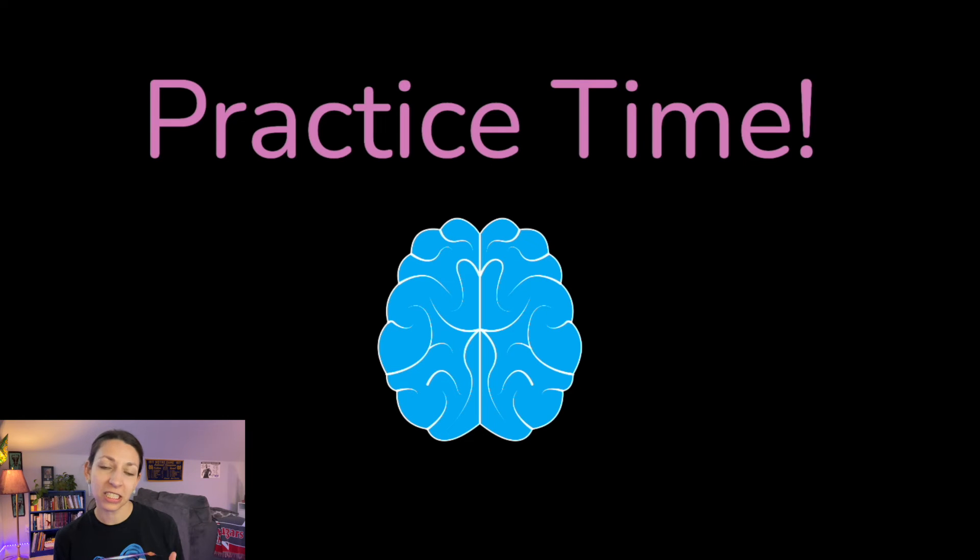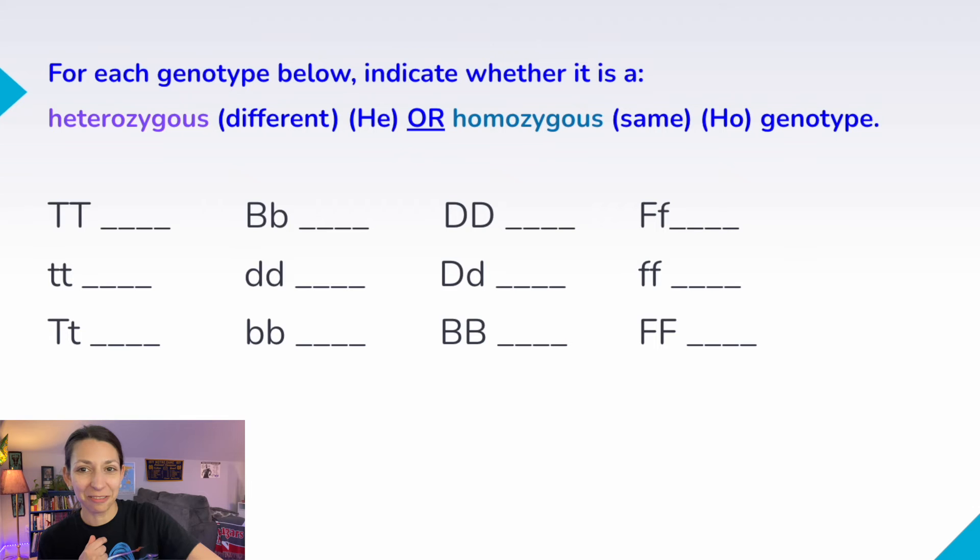All right, let's get into some practice. Today's practice is not multiple choice. It's going to be some fill in the blank. You might want to get some scratch paper out to work on those Punnett squares. Let's do it. All right, for each of the genotypes below, indicate whether it's heterozygous, meaning two different alleles, or homozygous, meaning two of the same alleles. Should be pretty easy. You can do it in your head or pause the video and do it on paper. Here we go.